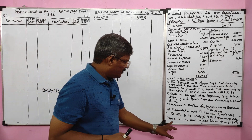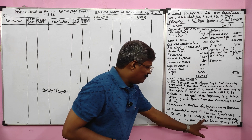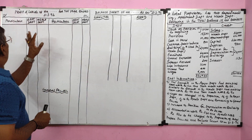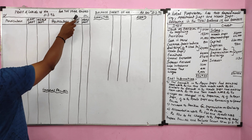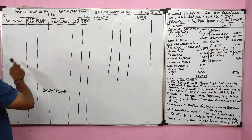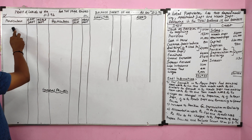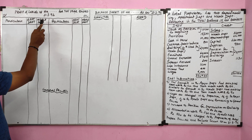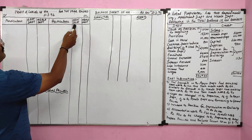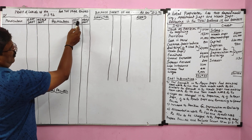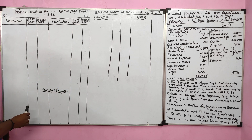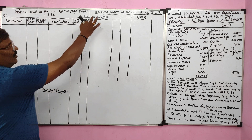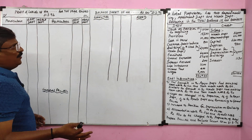We are asked to prepare the profit and loss account and balance sheet. The profit and loss account format has two columns on the debit side — apartment department and meals department — and two columns on the credit side likewise. In the general profit and loss account there is no department classification. I have also drawn the format of the balance sheet. Now we will start.